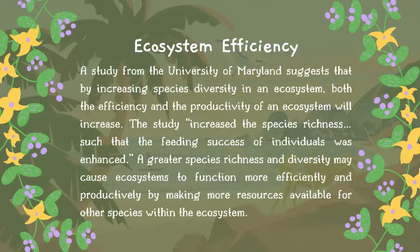Third is ecosystem efficiency. A study from the University of Maryland suggests that by increasing species diversity in an ecosystem, both the efficiency and productivity of the ecosystem will increase. Greater species richness and diversity may cause an ecosystem to function more efficiently and productively by making more resources available for other species. In essence, the more diverse species living in a place, the more capable they are of surviving through the give-and-take relationships among them.